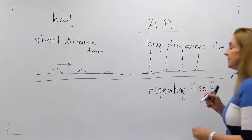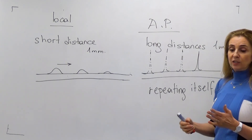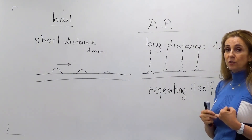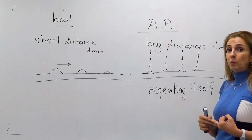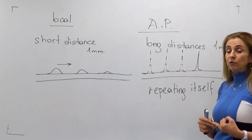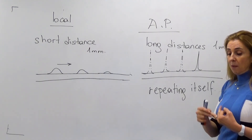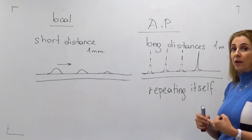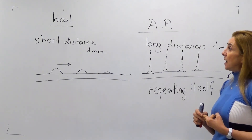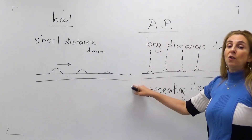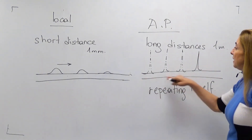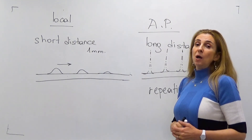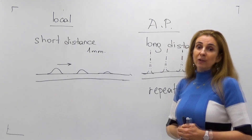In summary, the three basic differences between local potentials and action potentials are: first, local potentials are formed by mechanically or ligand-gated channels while action potentials are formed by voltage-gated channels; second, local potentials are graded by stimulus strength while action potentials obey the all-or-none law; and third, local potentials fade over short distances while action potentials regenerate and travel long distances. Thank you for listening.